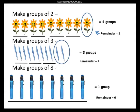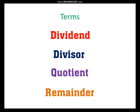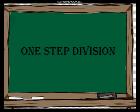Now let us revise the division terms. The number that is being divided is called the dividend — it is the biggest number. The number with which we are dividing is the divisor. The answer we get is the quotient. And if we are not able to divide completely and something is left at the end, that is called the remainder. Now we will start with one-step division.